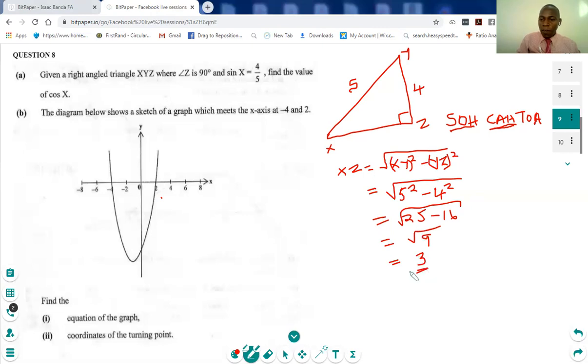Okay, so we have found XZ to be 3. Now we can say cos x is equal to adjacent over hypotenuse, so it's actually equal to 3, the adjacent, over 5, and this is the answer that you are looking for.